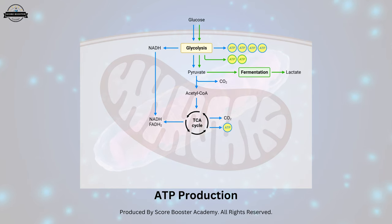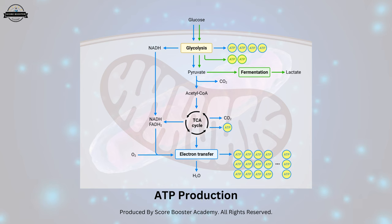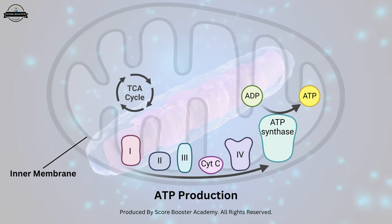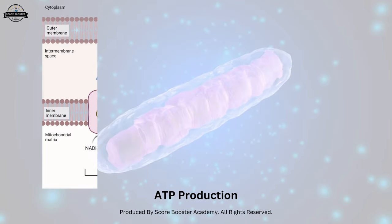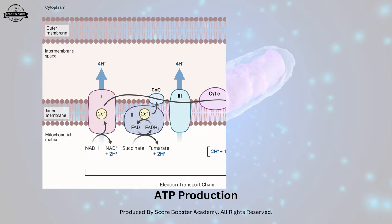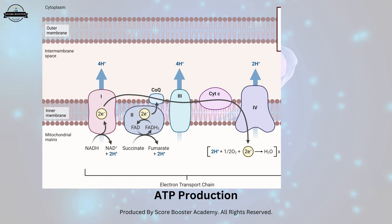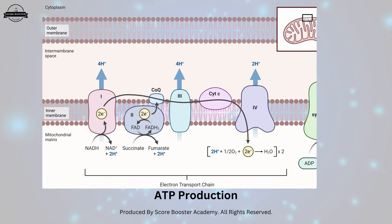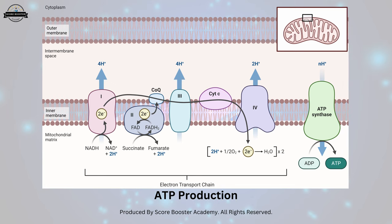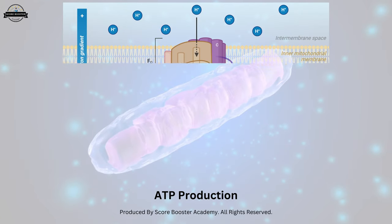The NADH and FADH2 produced during the Krebs cycle transfer their electrons to the electron transport chain, located on the inner mitochondrial membrane. As the electrons move through a series of protein complexes, energy is released, which is used to pump protons across the inner membrane. The accumulation of protons on one side of the inner mitochondrial membrane creates an electrochemical gradient.